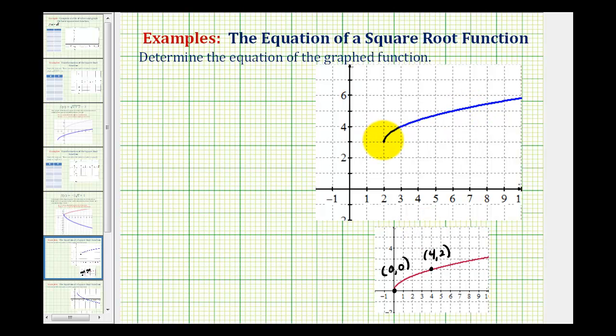For example, this point here, which would have coordinates, and then if we increase the x-coordinate by four, we'd be at this point here with coordinates.